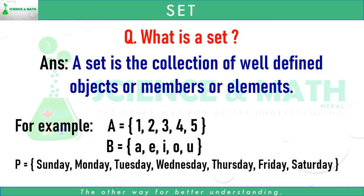B equals the set of Sunday, Monday, Tuesday, Wednesday, Thursday, Friday, Saturday. Here, in every set A, B and P, all these elements or members are well-defined.